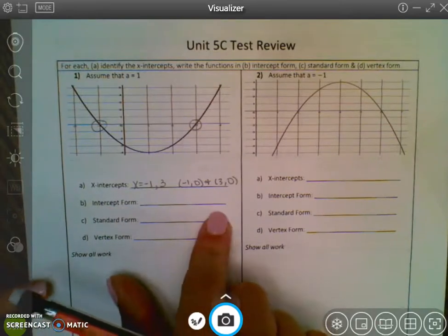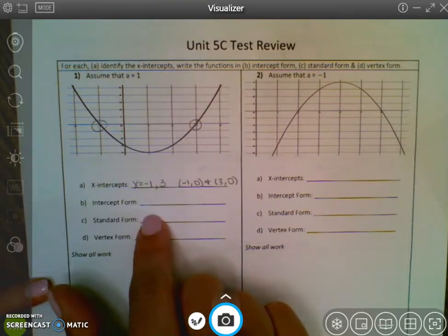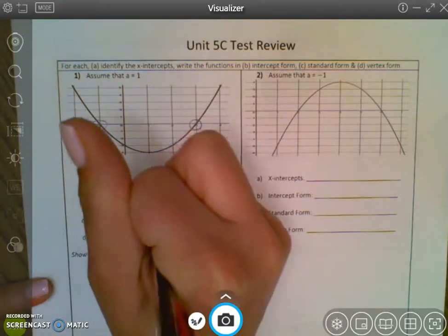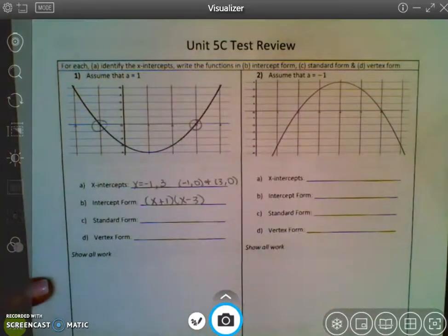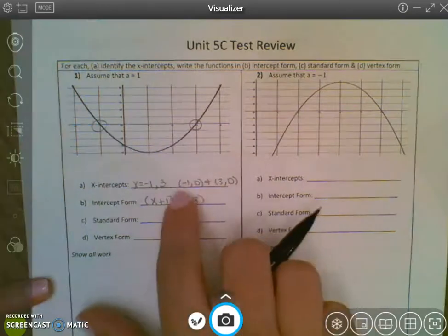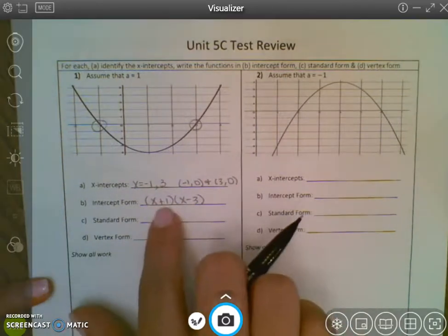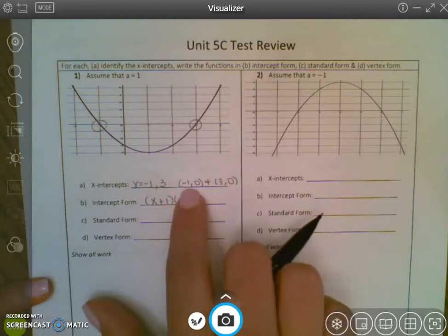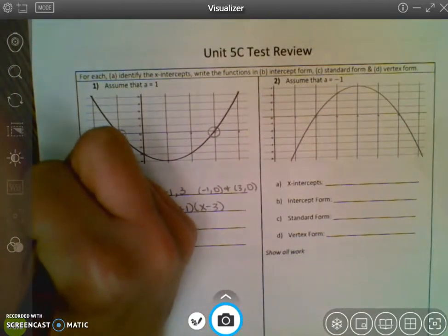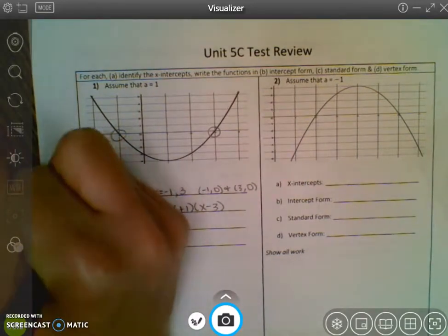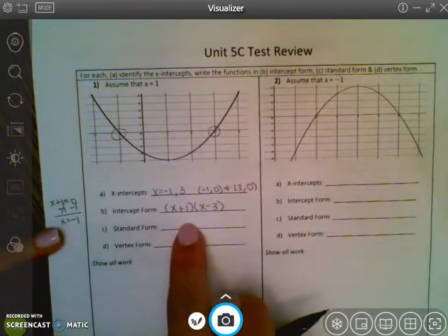Intercept form means that you're taking your x's and putting them back into parentheses. So negative 1 it goes back opposite, so you have x plus 1, and you'll have x minus 3. So it was a negative 1, now it's a positive 1. It was a positive 3, now it's a negative 3. It's because if I set each of these equal to 0, I will get my x's. If I said x plus 1 equals 0 and I solve by subtracting 1 to both sides, that x would equal negative 1, and you can see it is negative 1. So that's why they go back opposite.